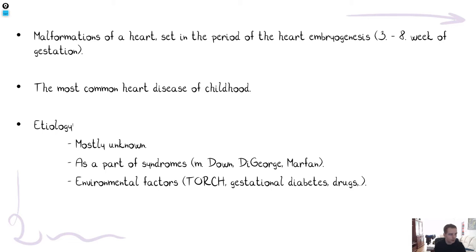What is a heart malformation? It's a congenital malformation of the heart set in the period of heart embryogenesis, which is between the third and eighth week of gestation. It's by far the most common heart disease of childhood. The etiology is mostly unknown, but sometimes it can come as part of genetic syndromes such as Down syndrome, DiGeorge, and many others.